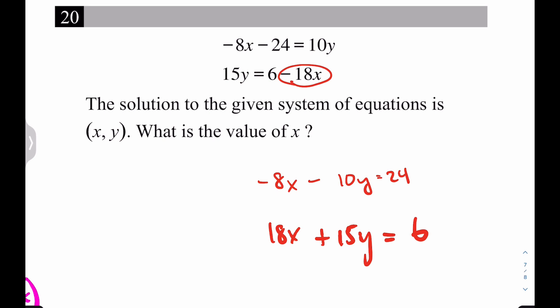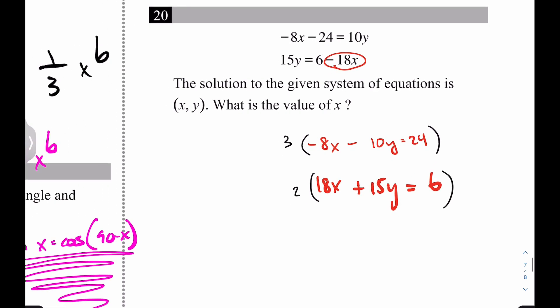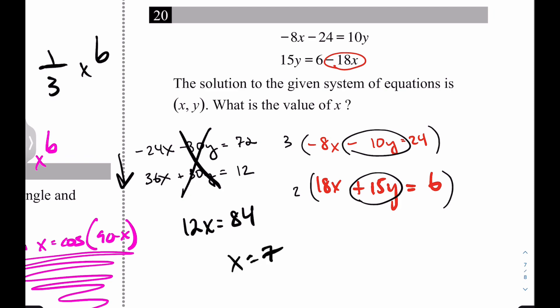At that point, I want to solve for x. So I should probably kill off or eliminate the y's. So I'll multiply this one by 3, and multiply this one by 2. Thus, these would both meet up at 30. Let's see what happens. Negative 24x minus 30y equals what is 3 times 24? 72. This is 36x plus 30y equals 12. And when I add these straight down, the y's cancel. I'm left with 12x equals 84. x equals 7. Done.